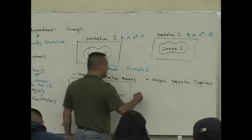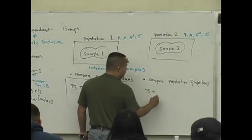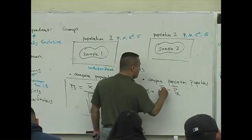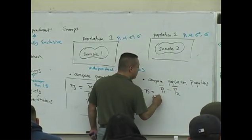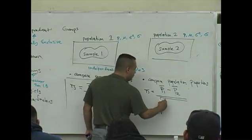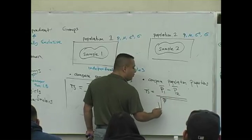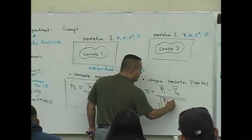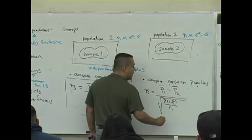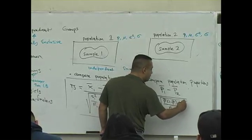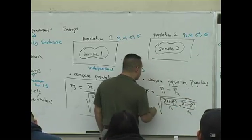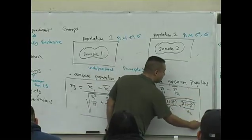Comparing two proportions, it's the first sample proportion minus the second sample proportion divided by the square root of: pooled P times 1 minus pooled P over the first sample size, plus pooled P times 1 minus pooled P over the second sample size. That's the second test statistic value.